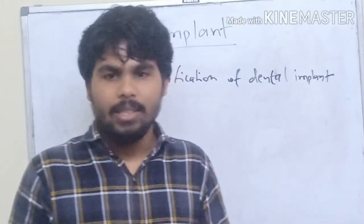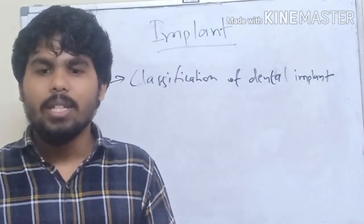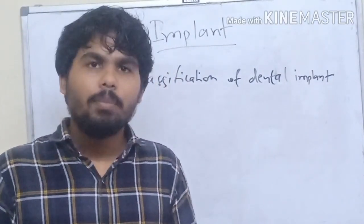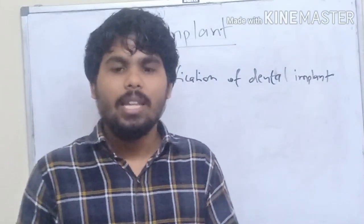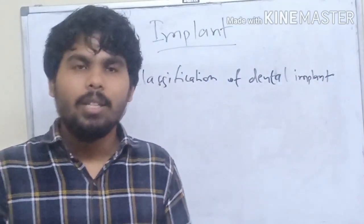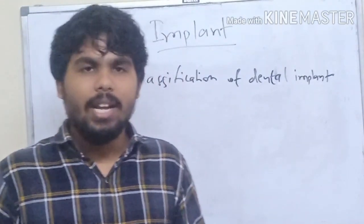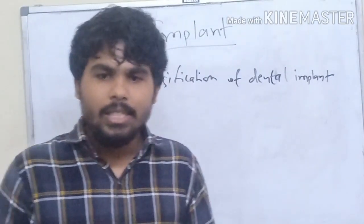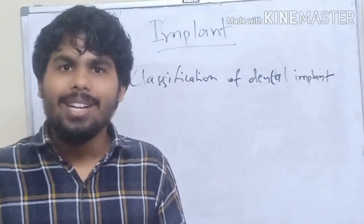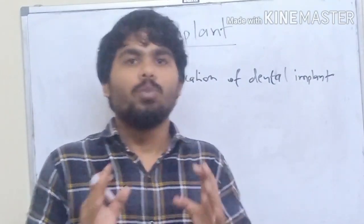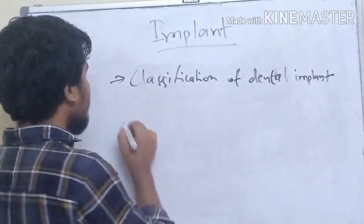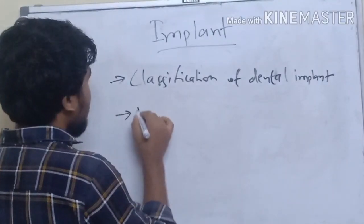Based on the macroscopic design, implants can be cylindrical, blade-like, disc-like, pins, screw-type, or tapered. Now moving towards the surface characteristics and micro design of the implant material.